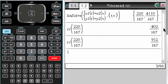So the x coordinate is negative 402 over 167, and the y coordinate is 912 over 167. And I mean, just to show you, you don't need to do this, but if I do this...